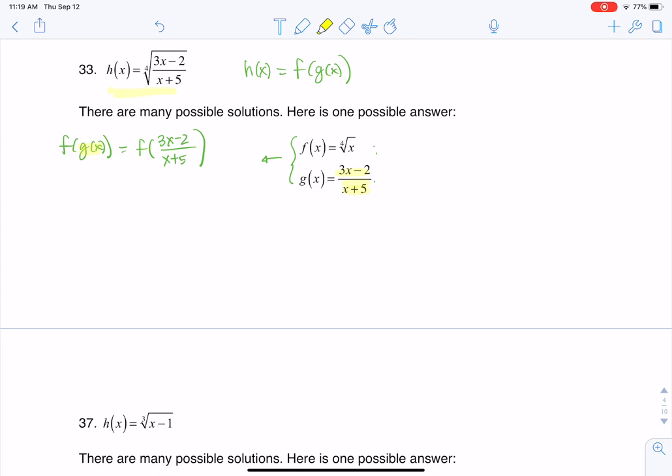Okay, and then the rule says, all right, well, whatever's in the parentheses here, let's go ahead and just take the fourth root of it. So if I'm continuing with this, this would then become the fourth root of 3x minus 2 over x plus 5, and sure enough, that is h(x). So if that's what you were guessing for your inner and outer function, great.